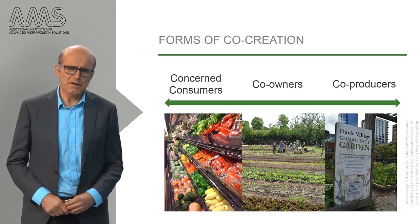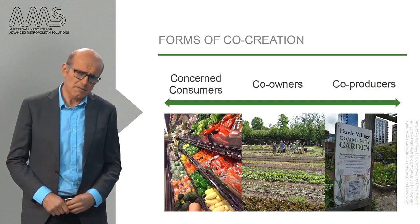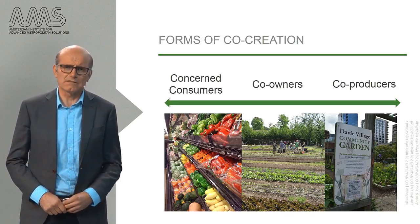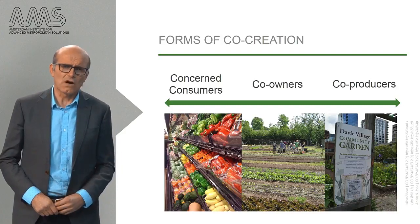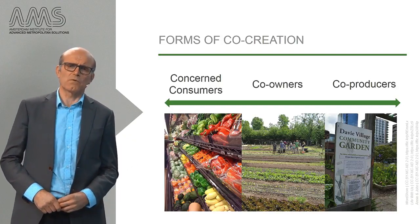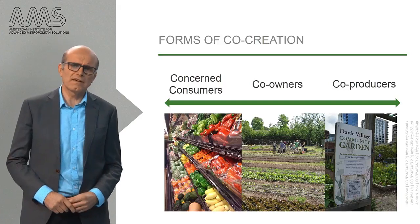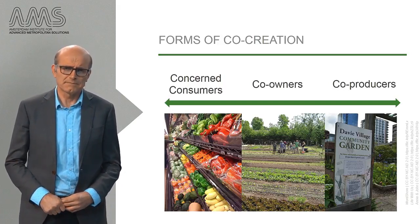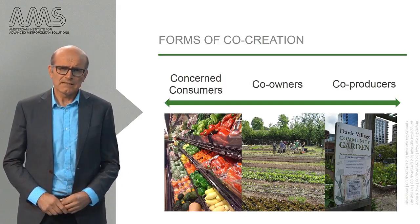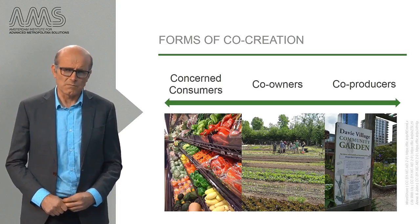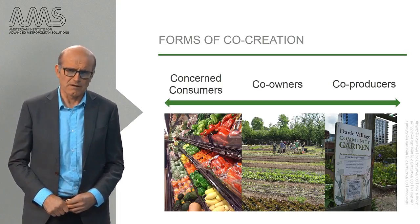Citizens can also prepay the farmer at the start of the season to make him or her independent from the bank or credit supplier. This is often combined with doing all kinds of voluntary work at the farm — sowing, weeding, pruning, feeding or harvesting. In this way, citizens as co-owners commit not just their money but also their labour to the farm.